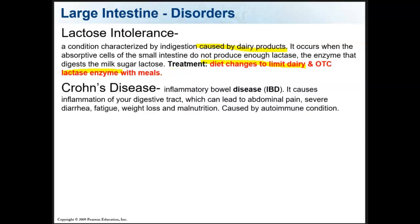Crohn's disease is an inflammatory bowel disease. It causes inflammation of your digestive tract, which can lead to abdominal pain, severe diarrhea, fatigue, weight loss, and malnutrition. It is caused by an autoimmune condition.